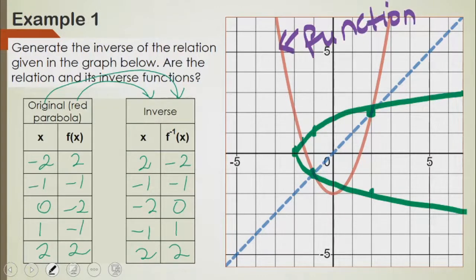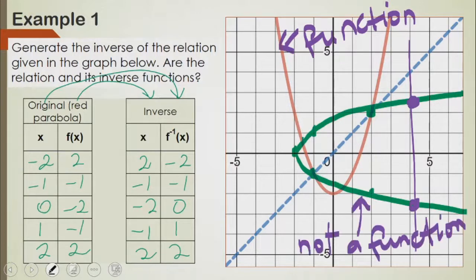But when you look at the green line, if you draw a vertical line across it, the vertical line crosses the green line two times. So the inverse is not a function.